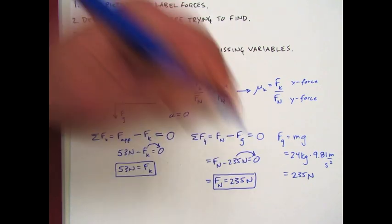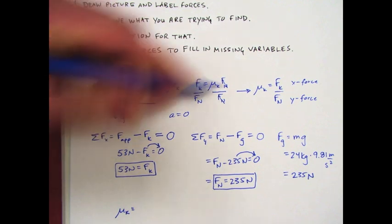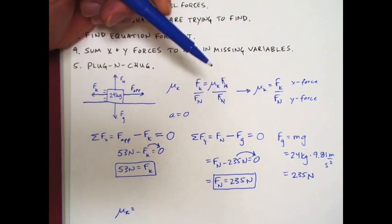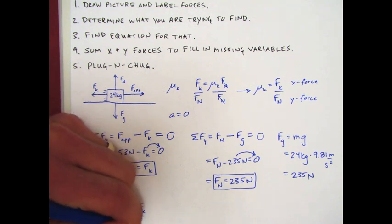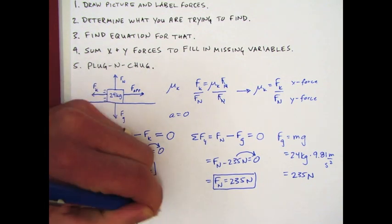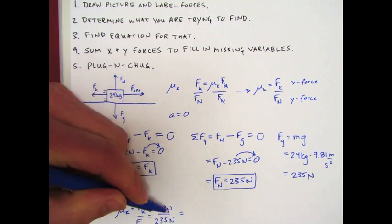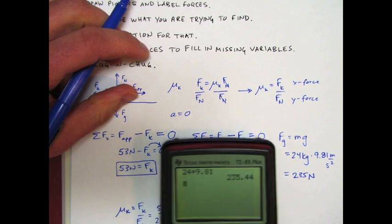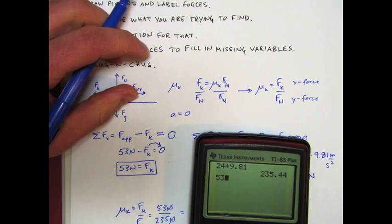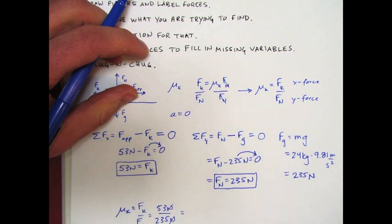Now we are ready to proceed to find the coefficient of kinetic friction. Again I'm using this equation that I figured out up here: kinetic friction divided by the normal force equals 53 newtons divided by 235 newtons. And notice that newtons are on top of newtons here which means they cancel out. Let's get out that calculator again and go 53 divided by 235 and I get 0.225. I'm going to round that to 0.23.